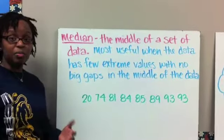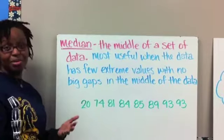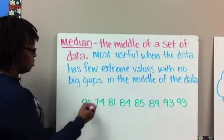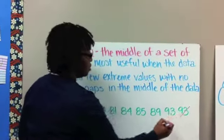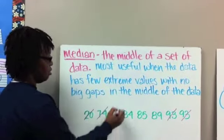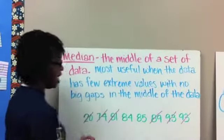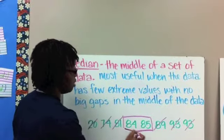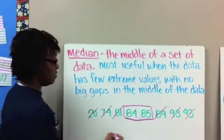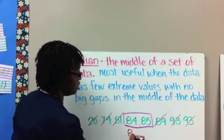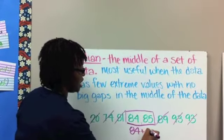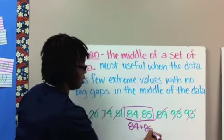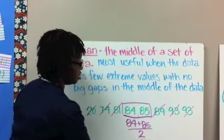Remember, for median, we put those orders in numerical, or we put the numbers in numerical order, least to greatest. And we want to find which number is in the middle of our data. Okay? And in this case, I have two numbers in the middle. I've got 84 and 85. And so I'm going to go ahead and just find the mean of those two numbers. So what I would do is 84 plus 85 and divide those by two since they're two numbers.